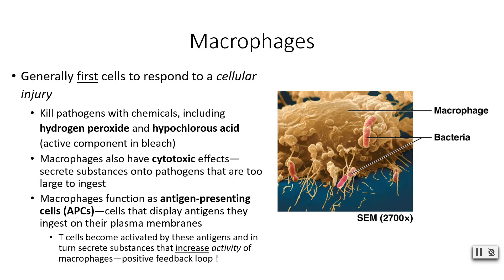Macrophages can also have a cytotoxic effect — cyto just means cell. They are going to secrete substances directly onto a pathogen and those substances can start to degrade the pathogen from the outside, or perhaps poke a hole in it and burrow in. This is to help destroy pathogens that are too large to ingest. There are pathogens that even a macrophage cannot phagocytize completely, so we secrete substances onto the plasma membrane of those cells and start to destroy them that way.